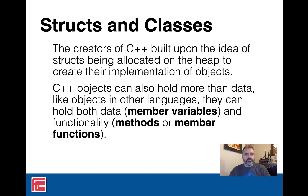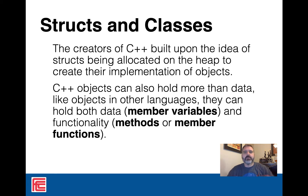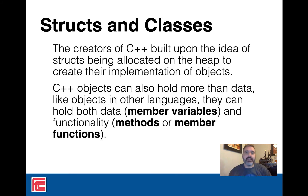So when Bjarne Stroustrup decided to create C++, he took that idea of structs and built on them to create something that was easier to create object-oriented programming with. The thing they came up with is called classes, and it's basically what we're going to talk about this week. They're basically objects that can hold more than just data — they can hold data as well as other functionality all together into one thing.